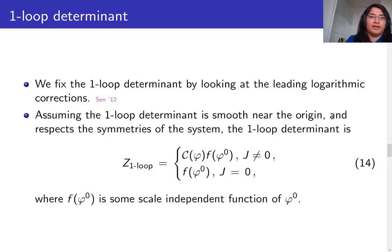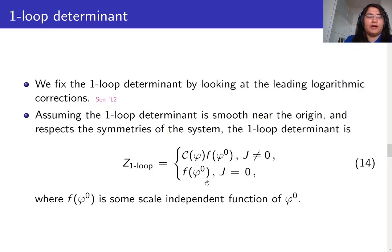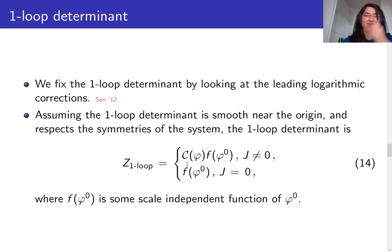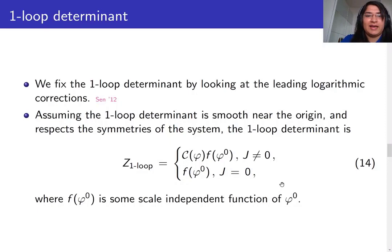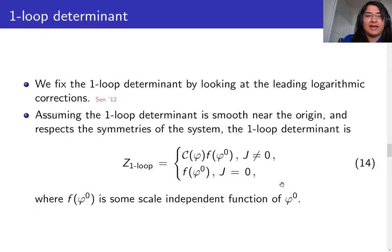The one-loop determinant was found by looking at leading logarithmic corrections to the entropy formula. When the angular momentum J=0, we get some function f(φ₀) of the Weyl multiplet fluctuation φ₀. If J is nonzero, we get an additional factor of C(φ) = C_ijk φ^i φ^j φ^k. Here f(φ₀) is a scale-independent function of φ₀. We used scaling arguments to determine the leading logarithmic corrections to get Z_1-loop, but as a result we were unable to specify the exact form of f(φ₀) — this remains something that needs to be resolved.